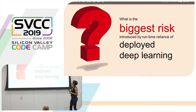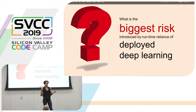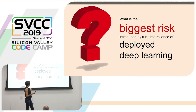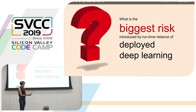We're all in together, so let's take off on the ride. So another question for you, the audience: what do you see as the biggest risk introduced by runtime reliance on Deep Learning? It's a big question. Runtime reliance of deployed Deep Learning — we're talking about any time that we're separating the human from the decision-making portion, any time we have automation.